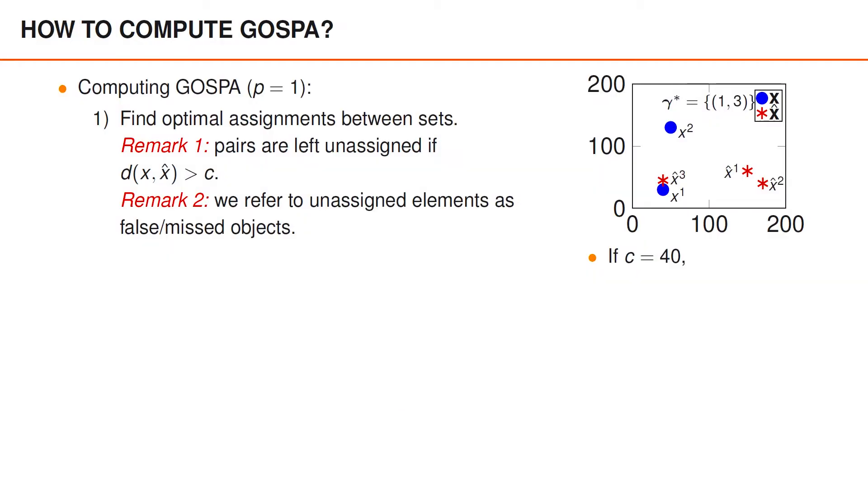Let us look at how GOSPA is computed. The first step is to find the optimal assignment between the two sets. The optimal assignment is a set of pairs of indices. For instance, the way we have indexed the object states and the estimates in the figure to the right. The only assignment that appears in the optimal assignment is the pair 1,3. Pairs are left unassigned if the distance between the points is larger than C. For instance, the reason that, say, 2,1 is not included in the set of assignments is that the Euclidean distance between these points is larger than C, which in this case is 40. We refer to unassigned elements as false objects if they belong to X hat and missed objects if they belong to X.